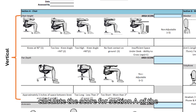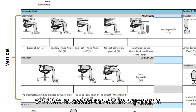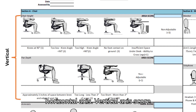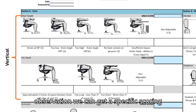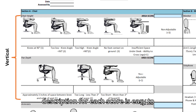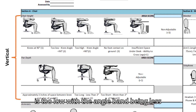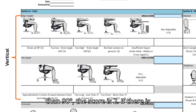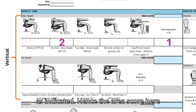To calculate the score for Section A of ROSA, which focuses on evaluating chairs, we assess the chair's ergonomic features along both the vertical and horizontal axes. The vertical axis score consists of the chair height area and seat pan depth area. For example, if the chair is too low with the knee angle bend being less than 90 degrees, the score is 2. If the chair height is non-adjustable, we increase the score by 1, making the area score 3.